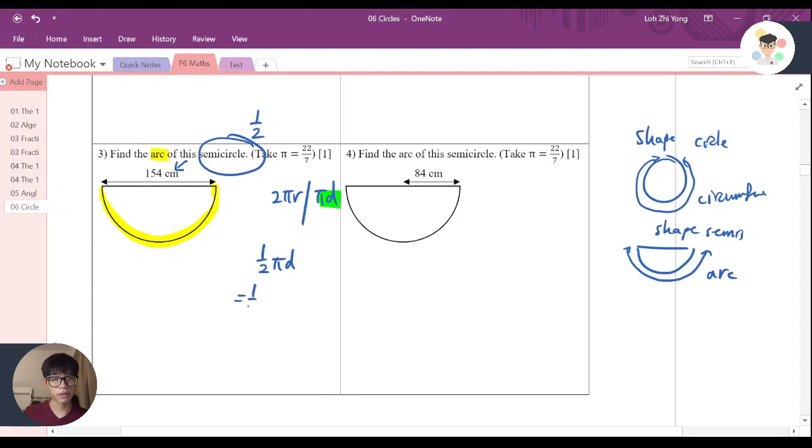Half, I know it's half. Pi, we are given 22 over 7 in this case. So we put here 22 over 7 times. And now, what is the diameter? As you can see, the diameter here is 154. So it times 154.